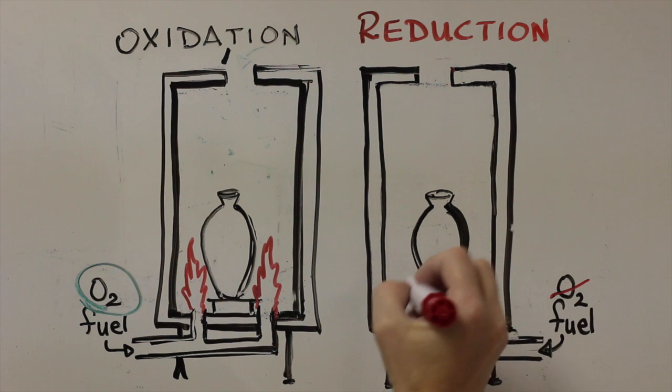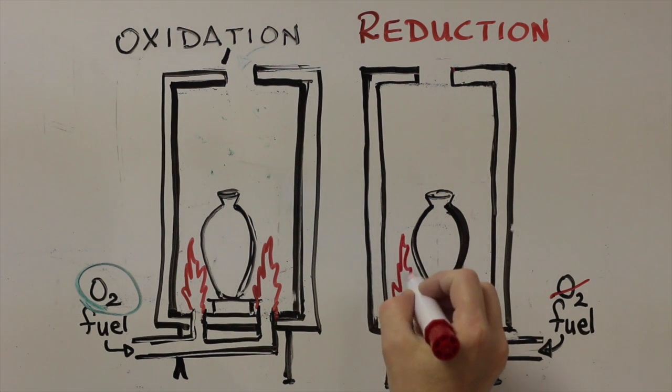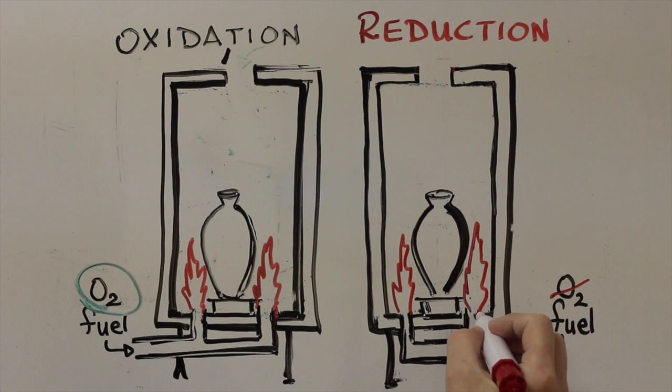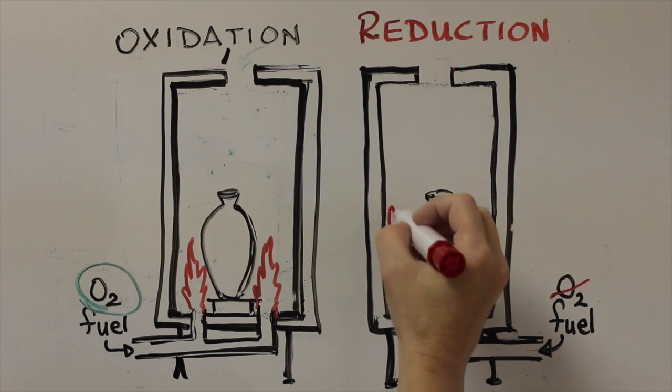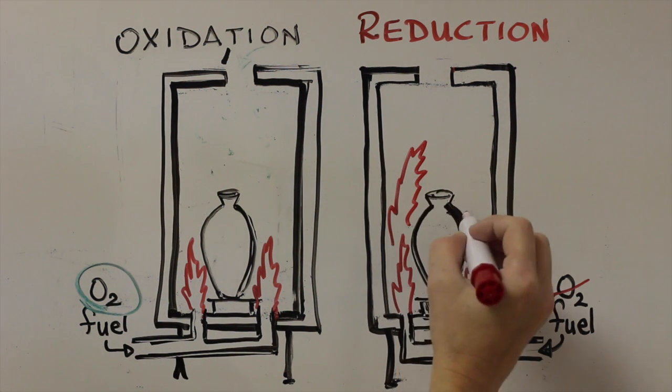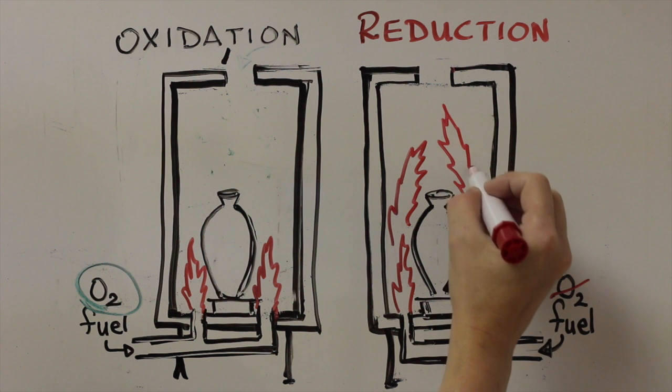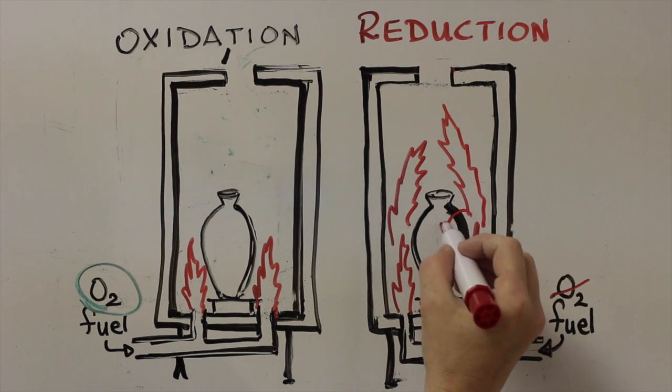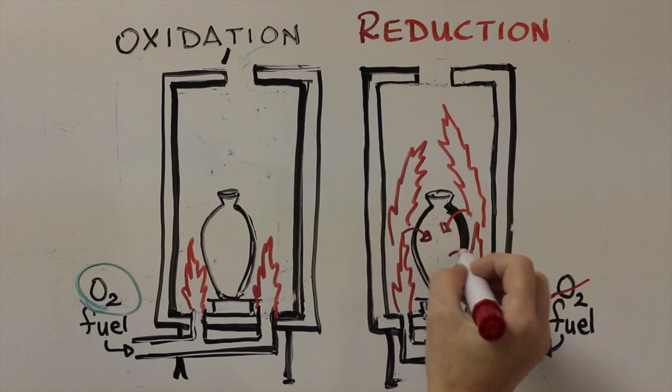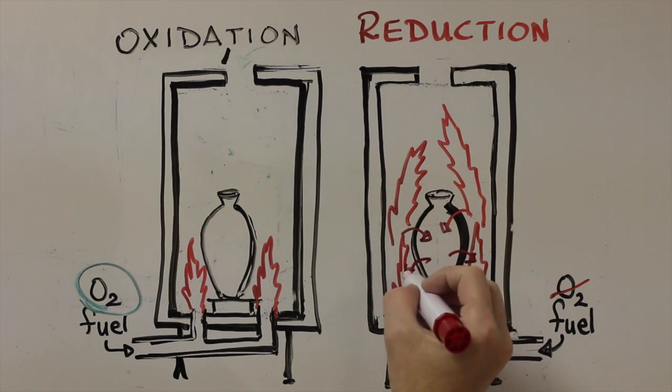This can be done by closing dampers and or air intake devices on the burners and by increasing the amount of fuel beyond the oxygen intake on the kiln. When this happens, the flame will borrow oxygen molecules from the clay and glazes in the kiln, often giving a very different appearance to the ware.